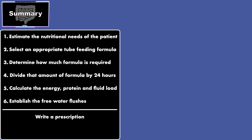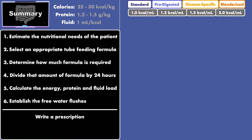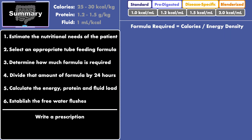There are several ways to estimate nutritional needs, but the easiest is a simple weight-based calculation for calories, protein, and fluid. Formulas can be standard, pre-digested, disease-specific, or blenderized, and within each category there is a range of energy density. Once a formula is selected, you determine how much is required by dividing the calories needed by the energy density.